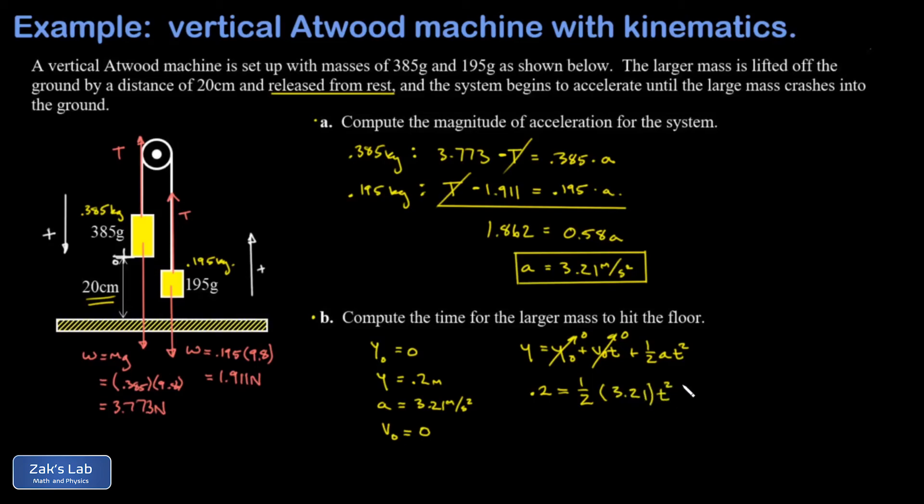This is a quadratic equation but it's trivial because the linear and constant terms aren't there. All we have to do is isolate t squared and take the square root. Multiplying by 2 and dividing by 3.21, I get 0.1246 on the left hand side that's equal to t squared. Take the square root of that and we get 0.353 seconds and that's it.